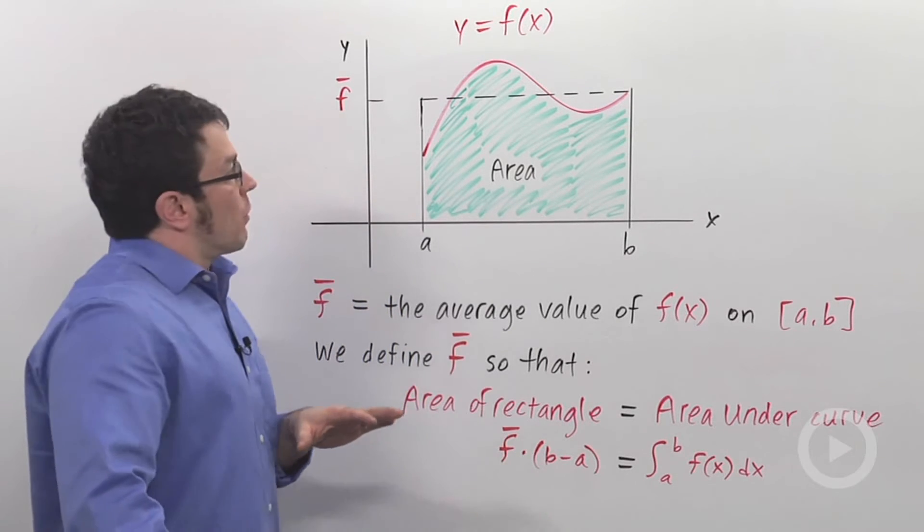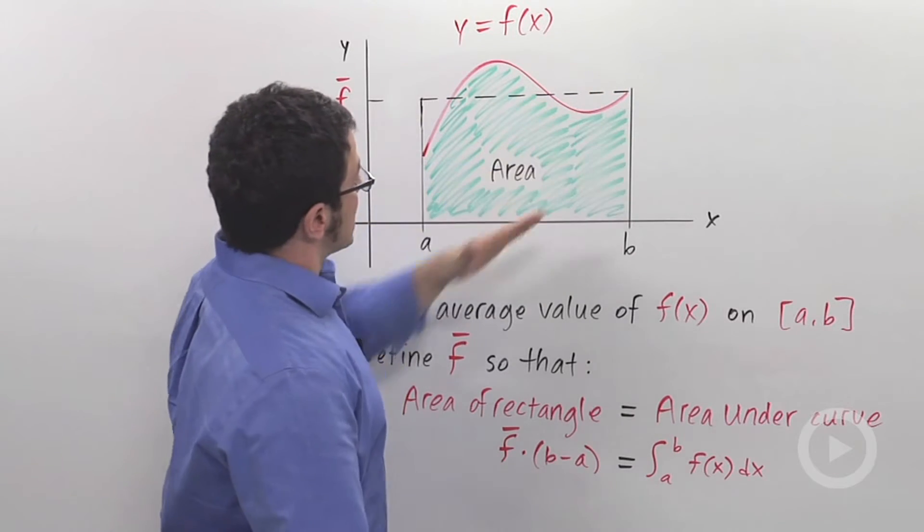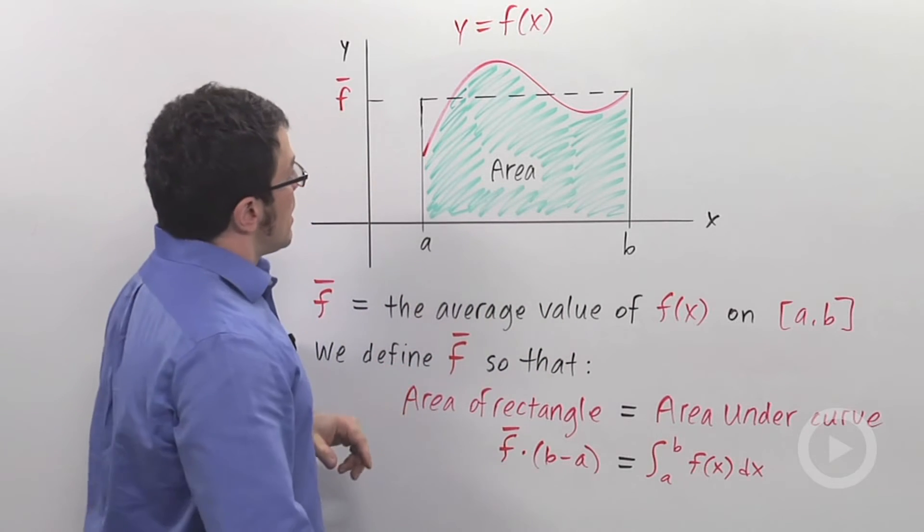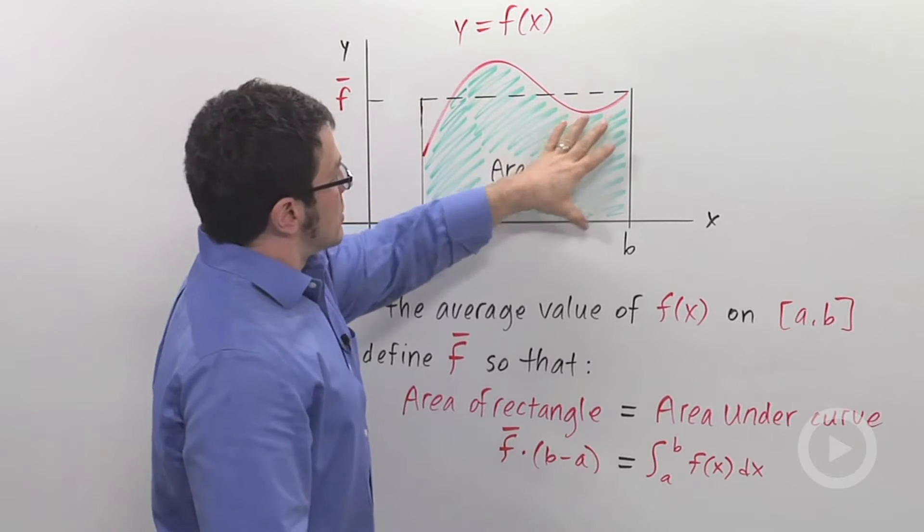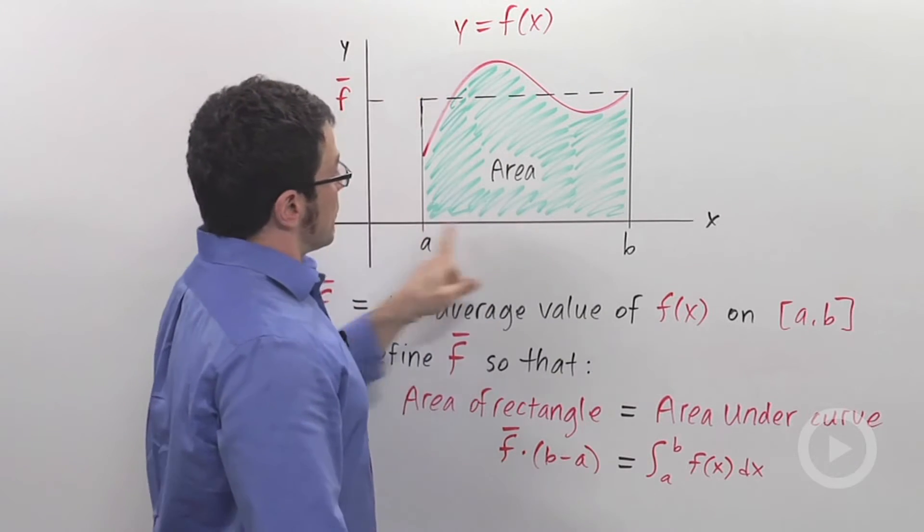And so how do you add those up and divide by infinity? That's not how we find average value. We find it a slightly different way. Imagine this is the function we want to average, y equals f of x. We want to average it over this interval from a to b. Think about the area under the curve.